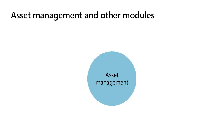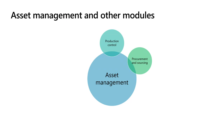The asset management module in Dynamics is heavily integrated with other areas of the system. Firstly, we have a relationship to the production control module. Through the production floor execution interface, we can request maintenance, report downtime on assets, and view and update asset counter values. We can also link assets to production resources to track production quality, quantity, and production hours. We use the procurement and sourcing module first to buy assets and track the acquisition process, and then also to buy spare parts that will be used in maintenance of assets.